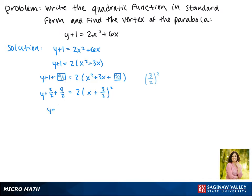Now we have y plus 11 over 2 equals 2 times the quantity x plus 3 over 2 squared.